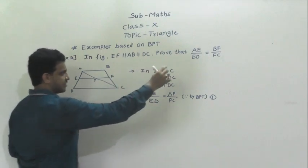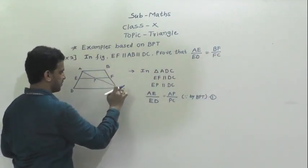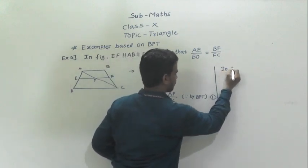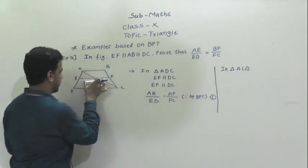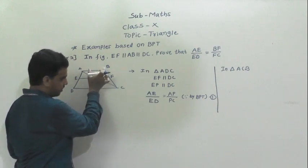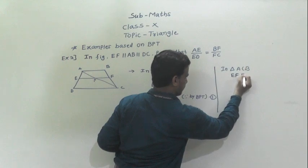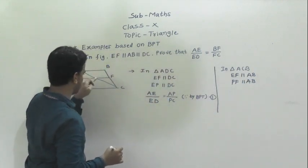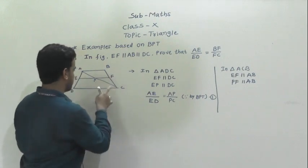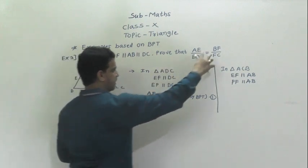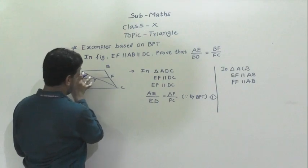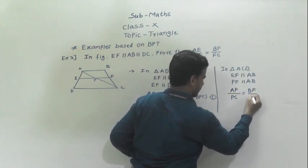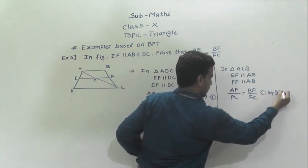Then we consider triangle ACB. Here EF is also parallel to AB, so PF is parallel to AB. By BPT we can write AP by PC is equal to BF by FC — call this equation 2.